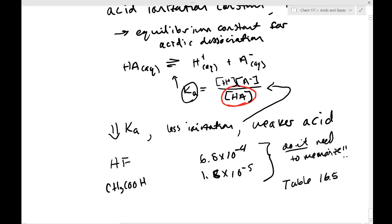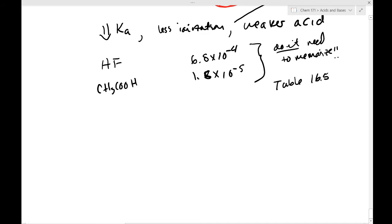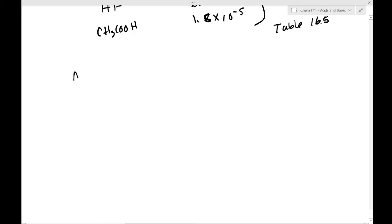So this is how we're going to quantify an acid — basically by the size of the Ka. The larger the Ka, the stronger the acid; the lower the Ka, the weaker the acid. Now I mentioned something called the amphotericity of water. Water is amphoteric, meaning it can be either an acid or a base. This is related to something called the auto-ionization of water.